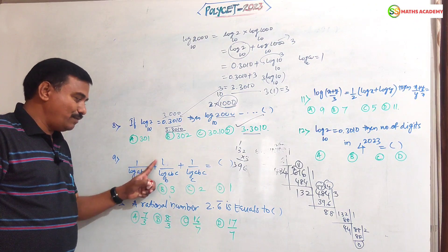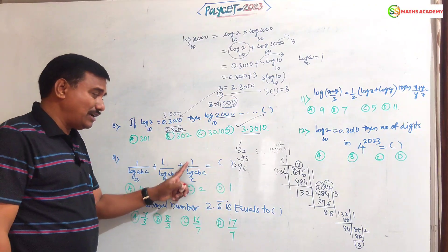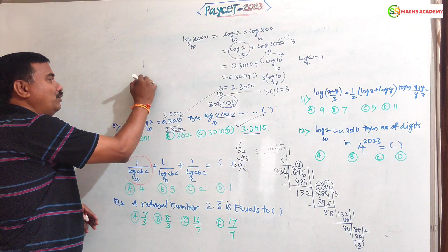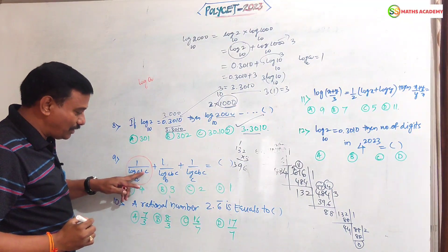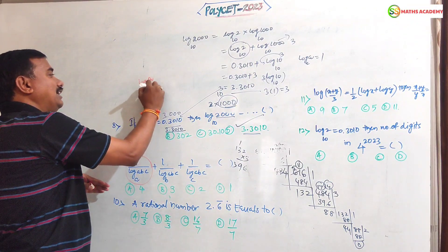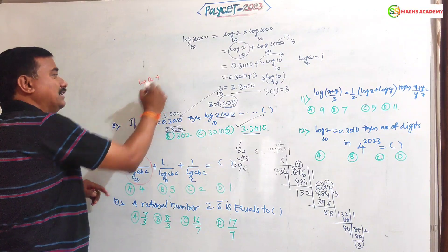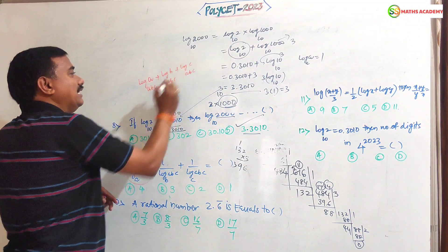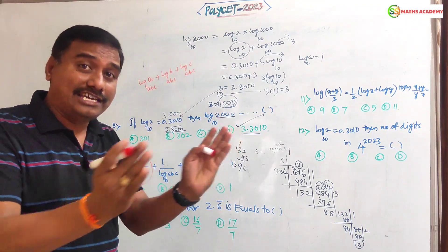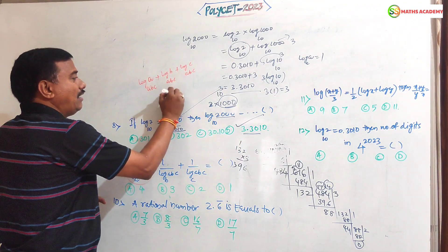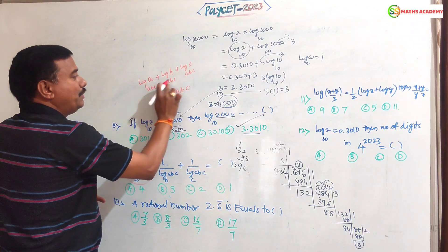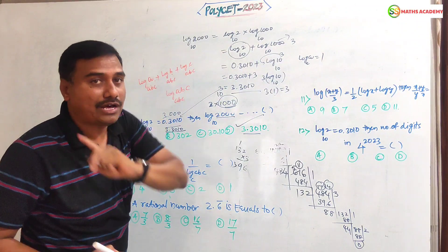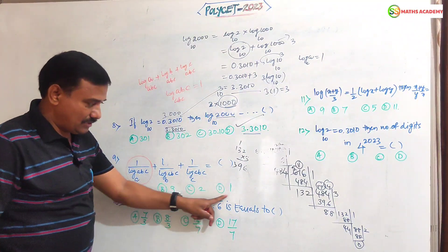1 by log ABC to the base A plus 1 by log ABC to the base B plus 1 by log ABC to the base C equals what? Simple. We should reciprocate. If you're doing reciprocally, this becomes base comes to argument, argument goes to base. Nothing but both are interchanged. So log A to the base ABC plus log B to the base ABC plus log C to the base ABC. By observing these 3 terms, log A plus log B formula is log A into B, base are same. That means log A into B into C, log ABC basis come. As you know, log A to the base A value 1 as per formula. Now log ABC to the base ABC value 1. Answer is 1.